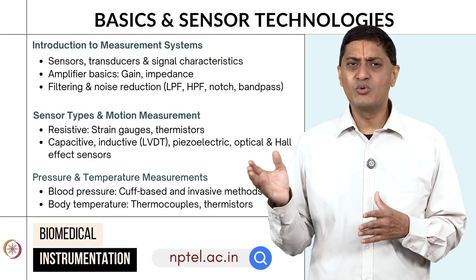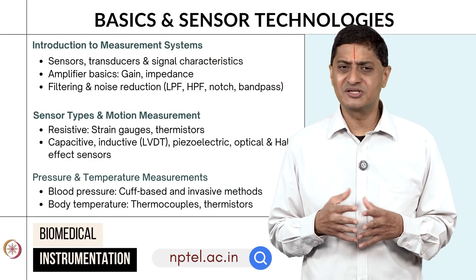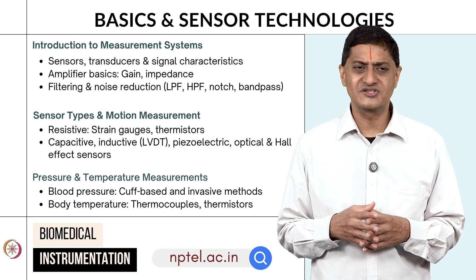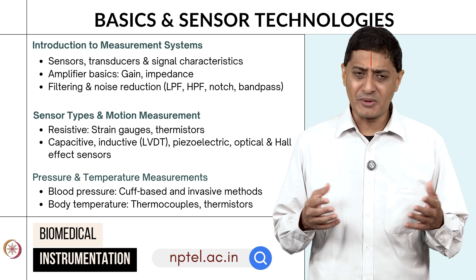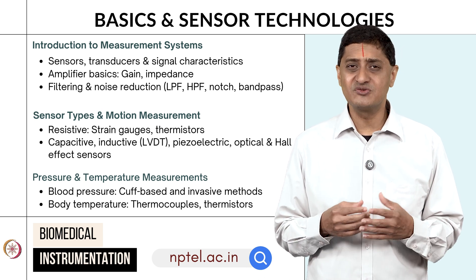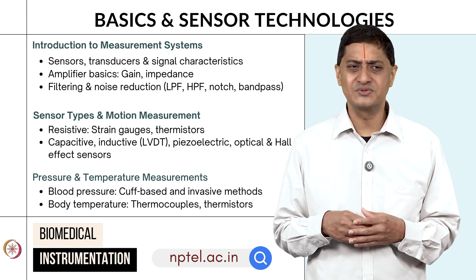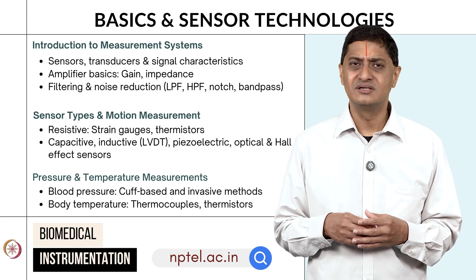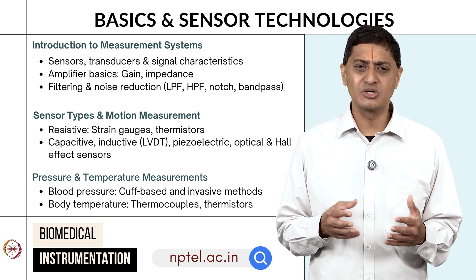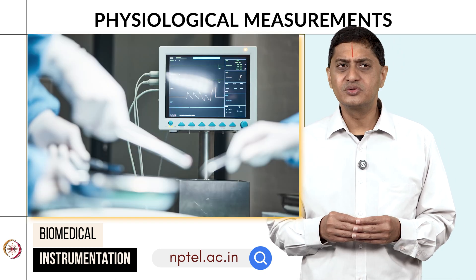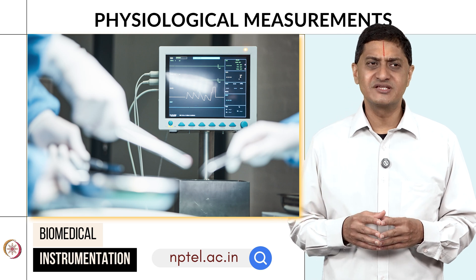Then we move on to pressure and temperature measurement — blood pressure cuff-based methods such as a sphygmomanometer, invasive methods used more frequently in ICUs, and temperature measurement using thermocouples and thermistors — through to flow and respiratory measurements.